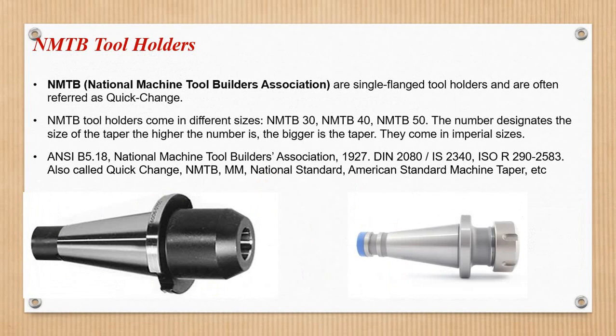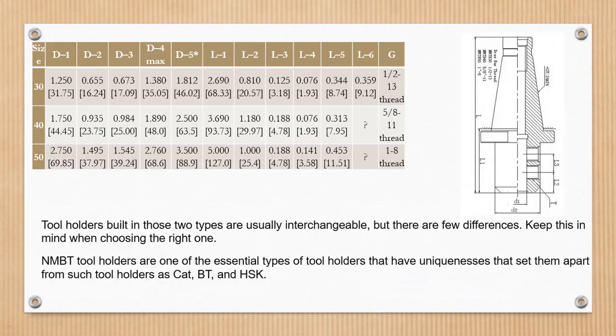NMTB stands for National Machine Tool Builders Association — with sizes NMTB 30, 40, 50. HSK is applied to a certain standard — DIN is called German Standard, IS is International Standard. CAT, BT, and HSK are similar, but with slight differences. DIN changes in HSK.